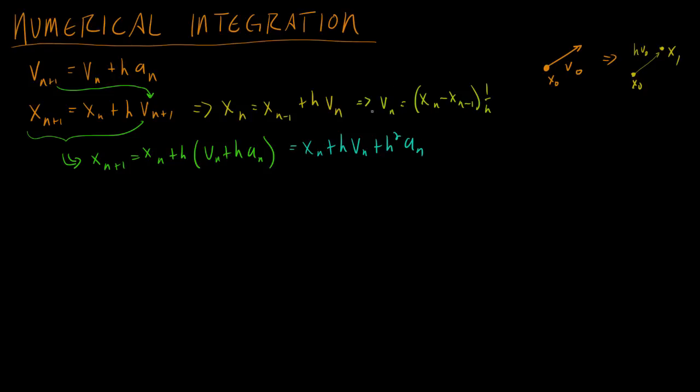And now is the time for me to take this guy right here and substitute him for this v_n. So I'm just going to take v_n equals x_n minus x_n minus 1 and substitute that right here. x_n minus x_n minus 1 times 1 over h plus this h squared a_n.